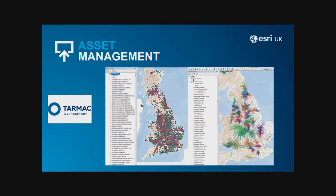Not only did they show where the assets and land holdings were, they attributed it — showing things such as what the population is, the development potential, what the haulage cost would be if they undertook further development, and really started to improve understanding of the assets by linking them to other data sets held within the organisation.